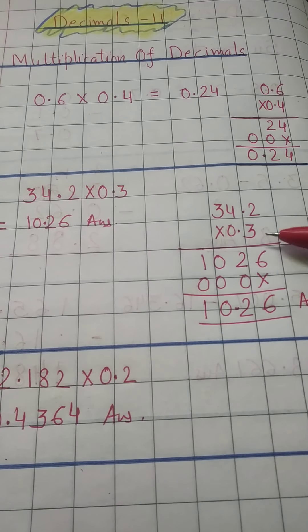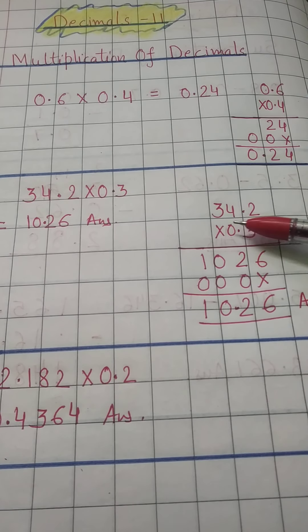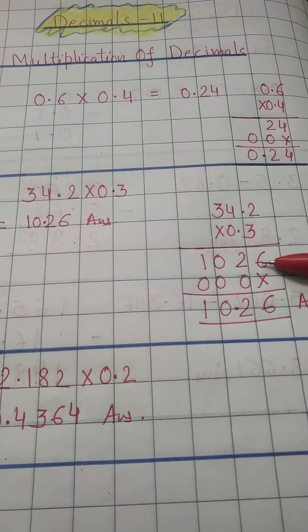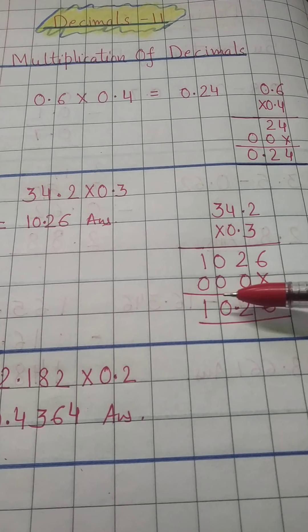Here I will multiply it like this: 34.2 into 3. So 3 times 2 is 6, 3 times 4 is 12, 1 carry, 3 times 3 is 9, and 10. Then 0 times 6 is 0.